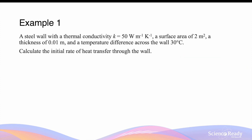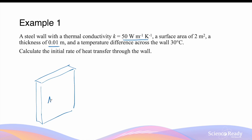A steel wall with thermal conductivity of 50 watts per meter per kelvin has a surface area of 2 meters squared and a thickness of 0.01 meter. We can draw this: a steel wall with an area of 2 meters squared, a thickness of 0.01 meter over which the heat is transferred, and a temperature difference across the wall of 30 degrees Celsius.